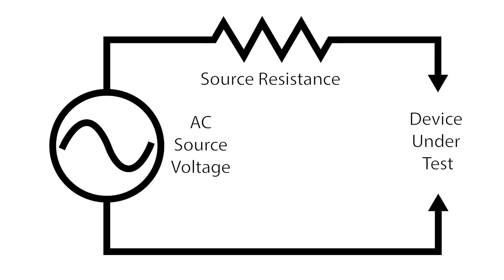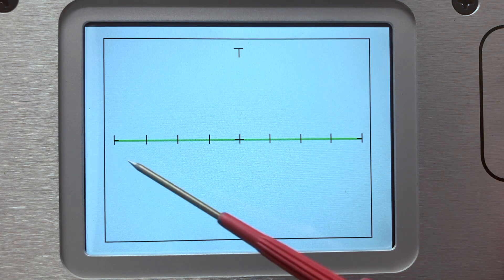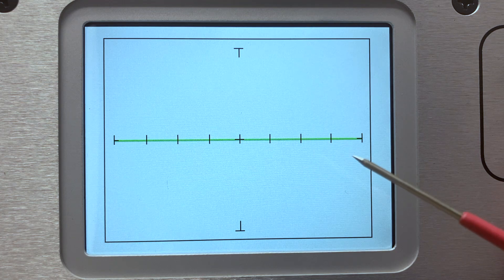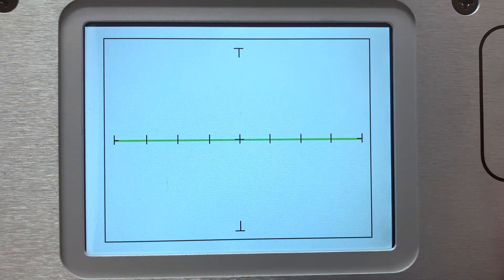A simple analogy would be to think of a Huntron tracker as a visual AC ohmmeter. The horizontal axis on the display represents voltage. An open circuit signature will be a horizontal line since we have maximum voltage across the points under test.